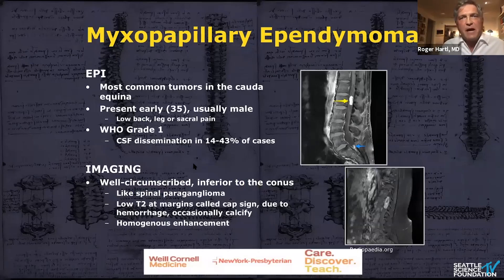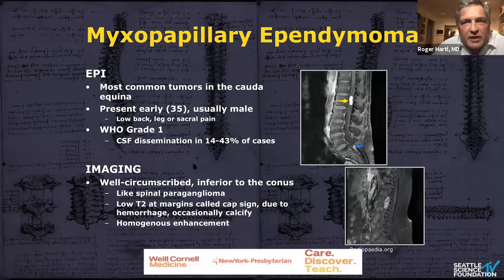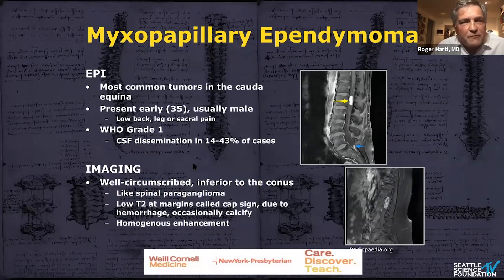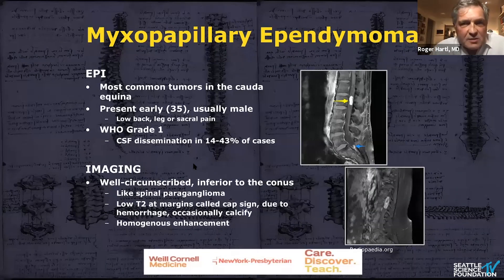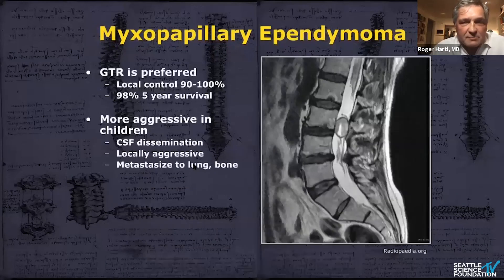Finally, myxopapillary ependymomas are very frequent in the lumbar spine — the most common spinal tumor within the cauda equina. They can present with back pain and multiple radicular symptoms because they are closely related to nerve roots. They are a low-grade tumor with a very good prognosis overall. If they occur in children, they can metastasize and be more serious, but in adults they usually have an excellent prognosis once removed surgically.